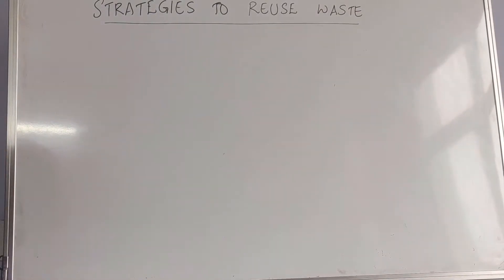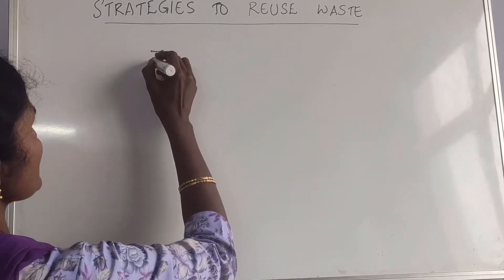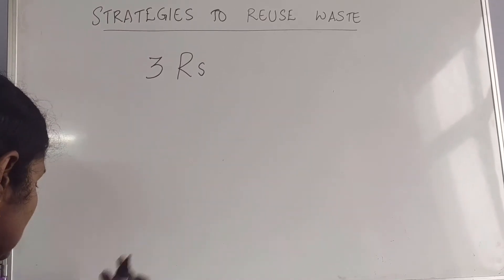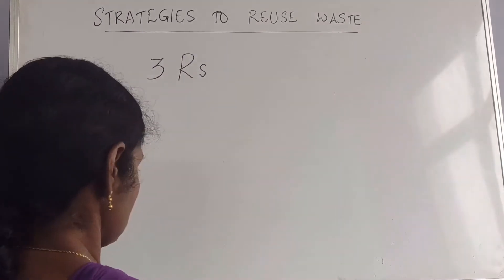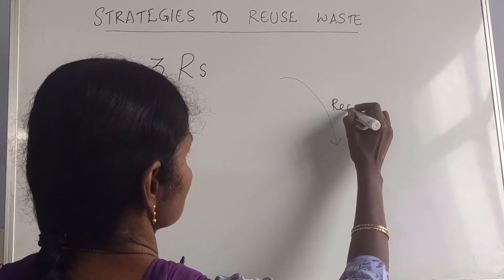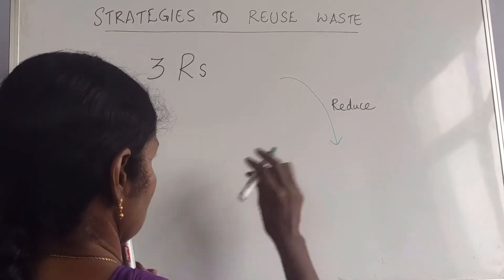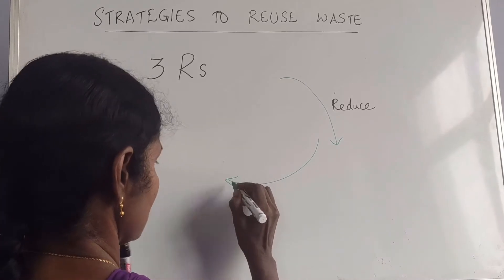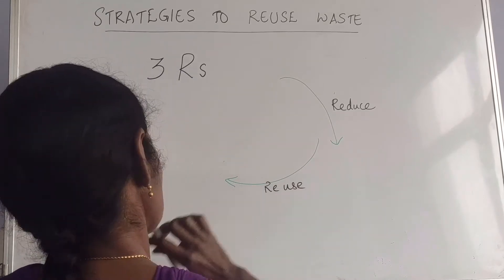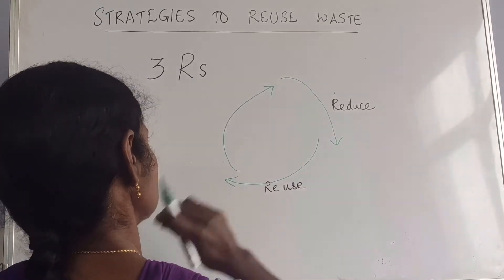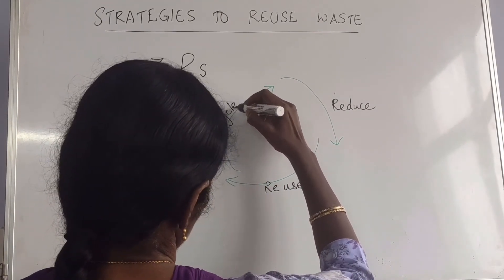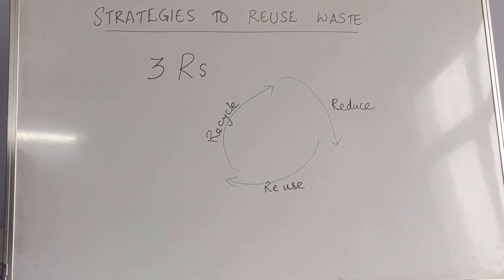Next, we move on to the strategies of reusing waste. This goes by the three R's. The three R's are: reduce, reuse, and recycle.